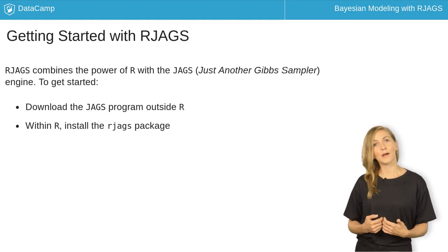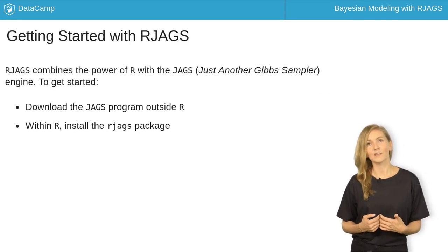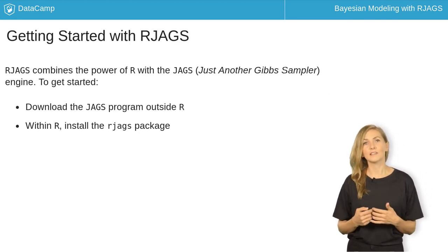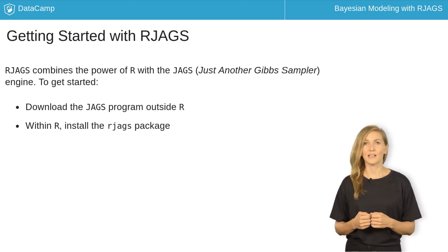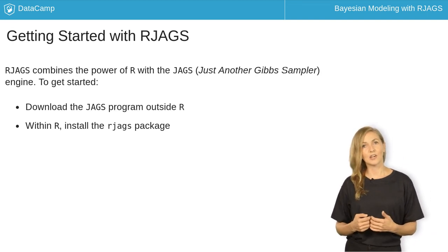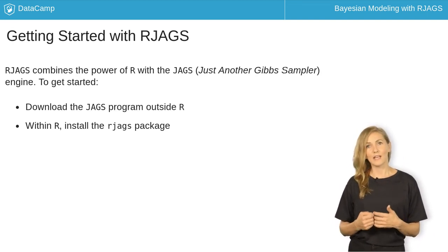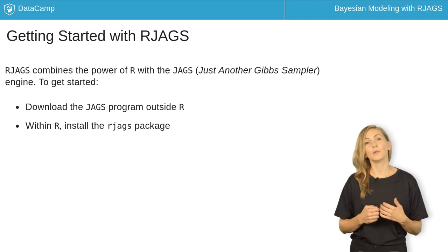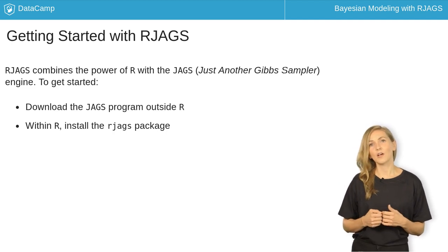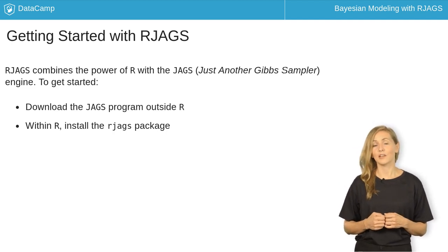RJAGS combines the power of R with the Just Another Gibbs Sampler, or JAGS, engine. To get started, first download the JAGS program outside R. Then, within R, install the most recent version of the RJAGS package.